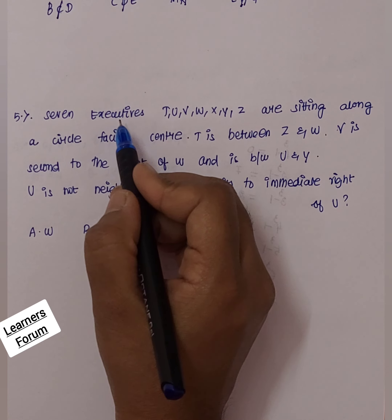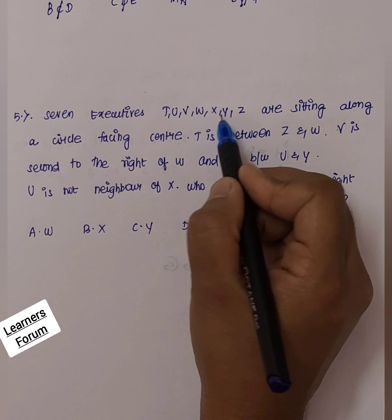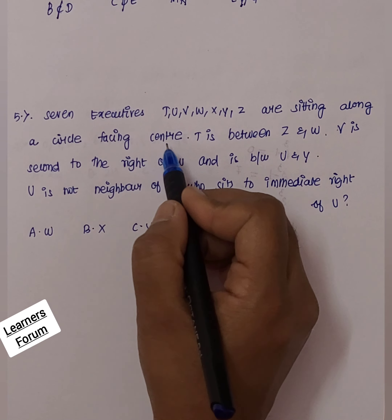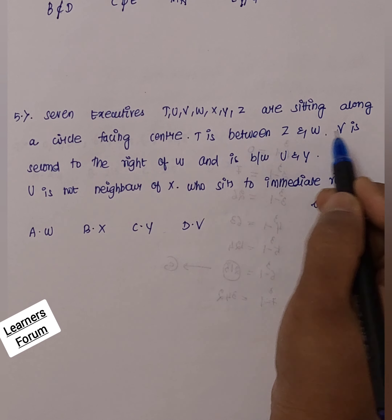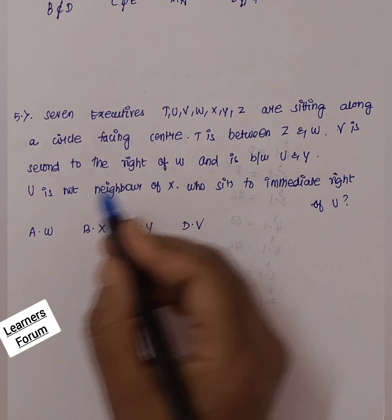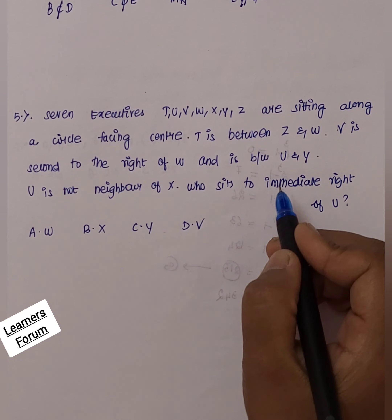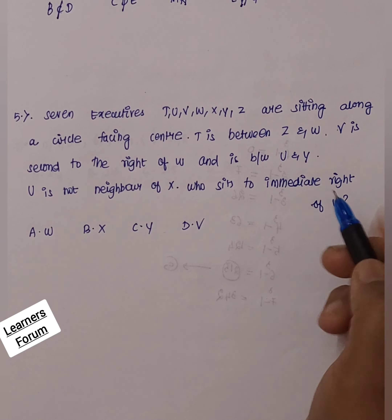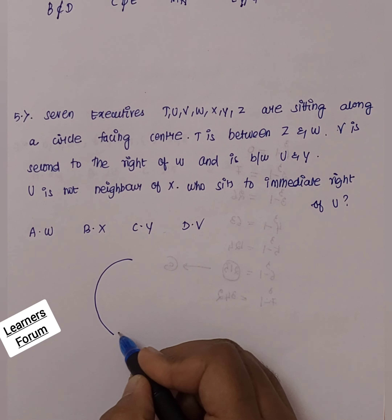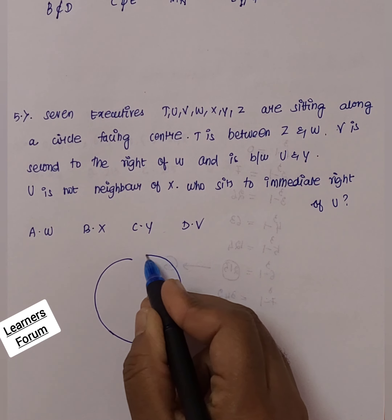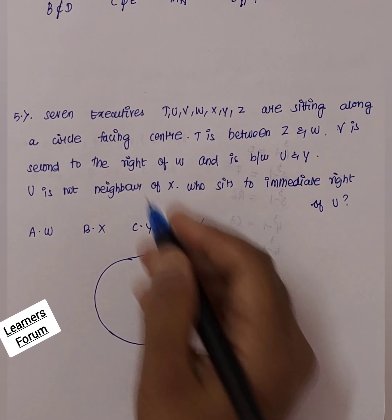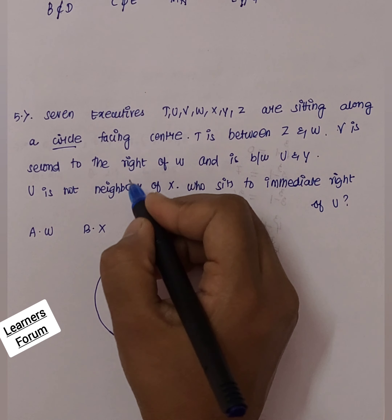Next question: seven executives T, U, V, W, X, Y, and Z are sitting along a circle facing the center. T is between Z and W. V is second to the right of W and is between U and Y. U is not a neighbor of X. Who sits to the immediate right of U? To solve this, let us take the positions of the given executives in a circle, since they are facing the center.